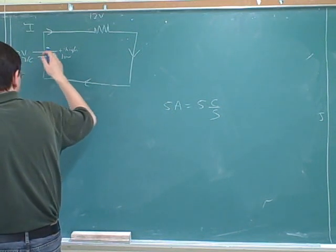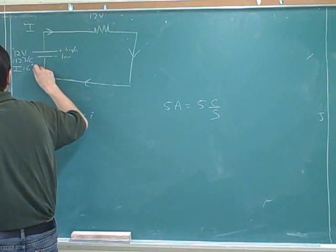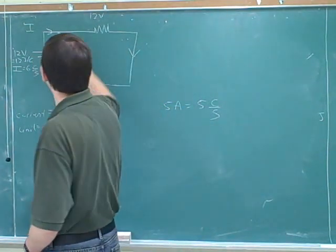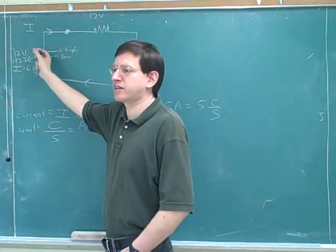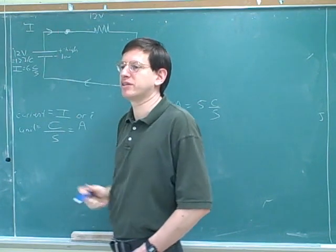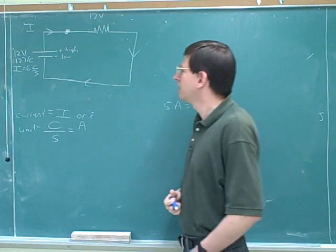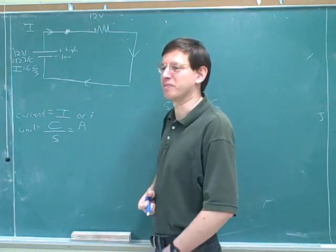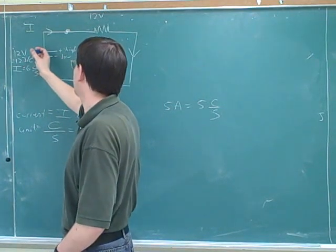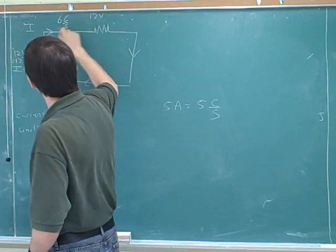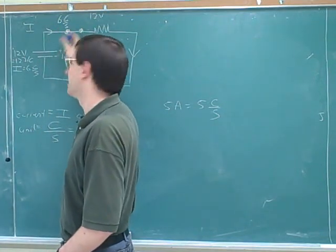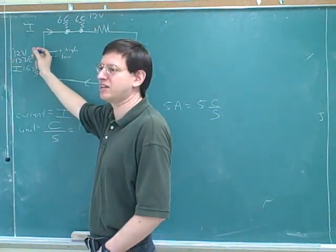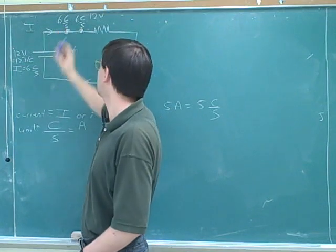Let's say we have a current of six Coulombs per second being delivered by the battery. If there are six Coulombs per second coming off the battery and passing through the battery, how many Coulombs per second would be passing through this point? Six — the six Coulombs per second coming off push aside six Coulombs per second here, which in turn push aside six Coulombs per second at the next point. These have to get out of the way to make room. It works for skiers too: if six skiers per second are coming off the ski lift, then six have to get out of the way at each point.